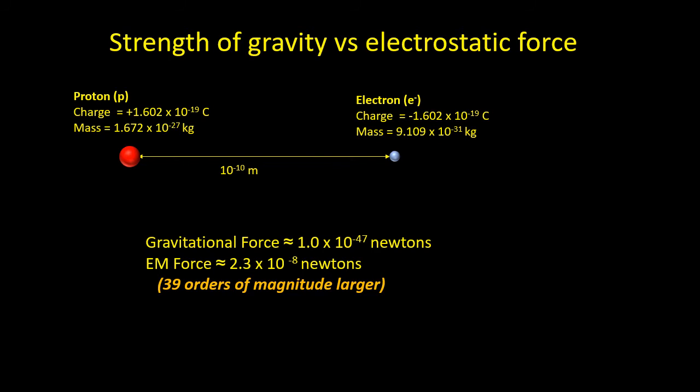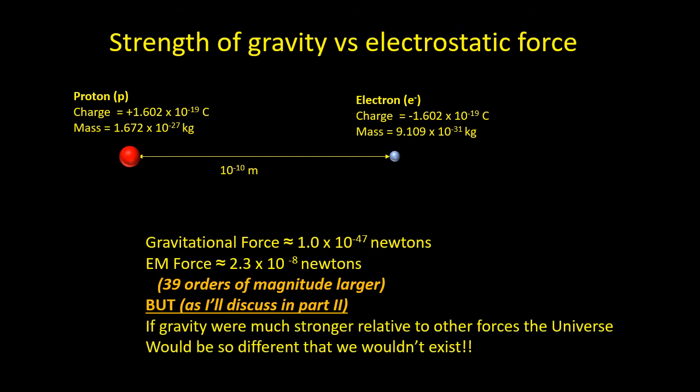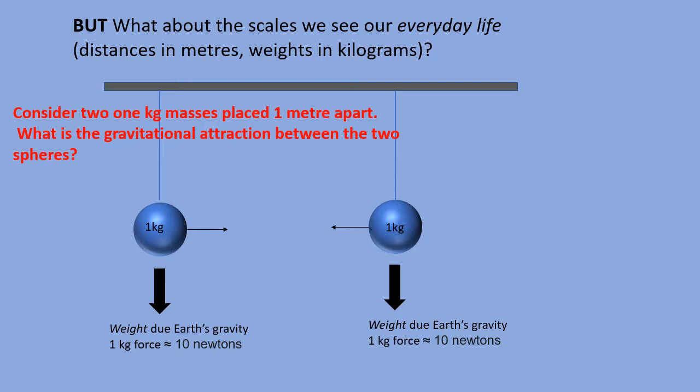If we look at the electrostatic force between the proton and electron, then it is 2.3 times 10 to the minus 8 newtons, 39 orders of magnitude greater. But the interesting thing is that if gravity were much stronger relative to the electromagnetic force, the universe would be so different that we wouldn't exist. This illustrates that on atomic scales, gravity is just so weak it can be totally ignored.